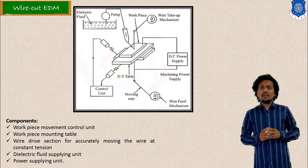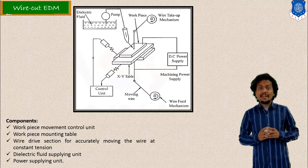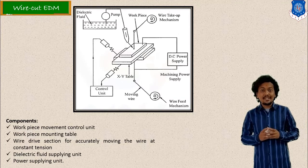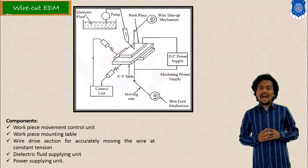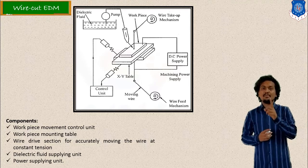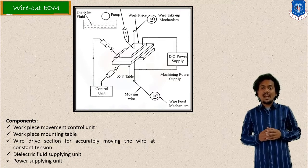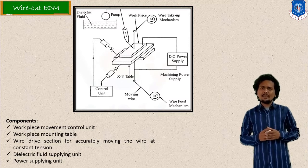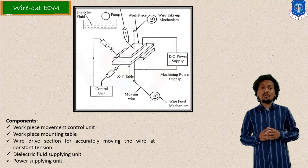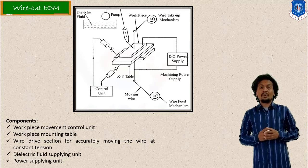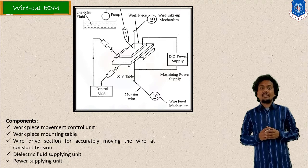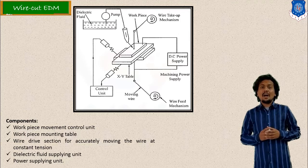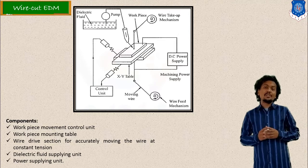The construction of this wire cut EDM process is shown in the figure. Various components are used. First, dielectric liquid or dielectric medium is most important. After that, the tool or electrode is also there. There is a dielectric supply unit in which a pump and filter are included. A workpiece motion control circuit is also there to control the movement of the workpiece. Additionally, a wire drive mechanism — the feed wire mechanism — is also used.